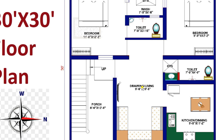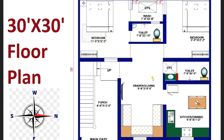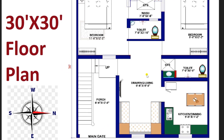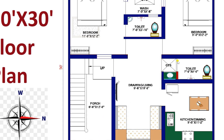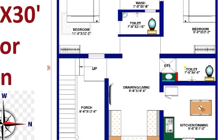Now I am returning back to the drawing or living room. There is a common toilet available. When you enter you can see there is a wash basin and the toilet is of dimension 7 feet by 4 feet.